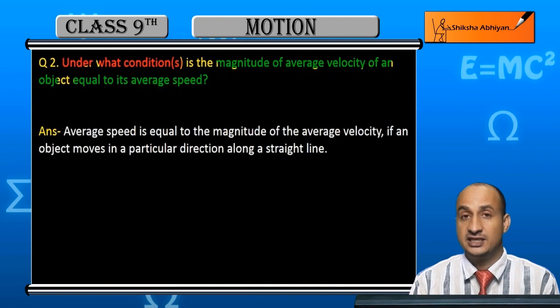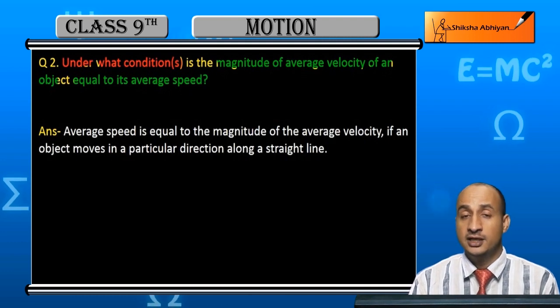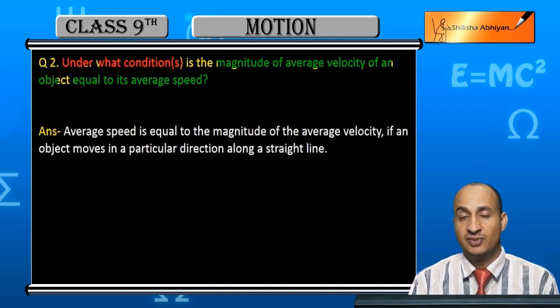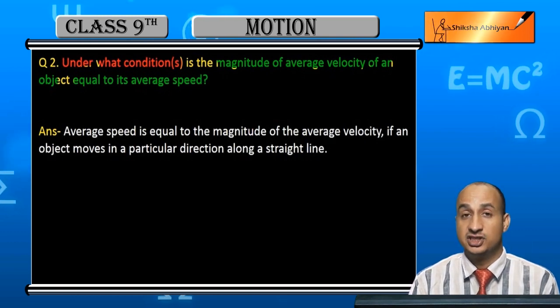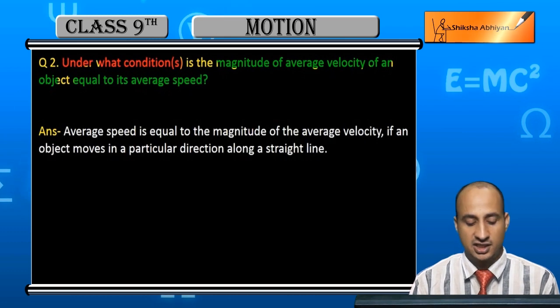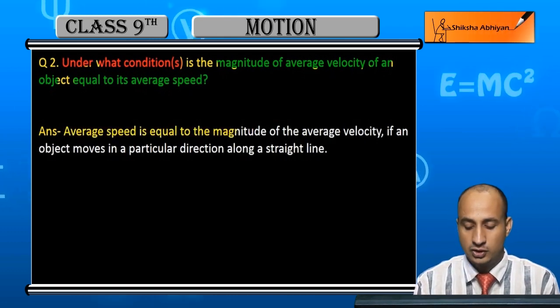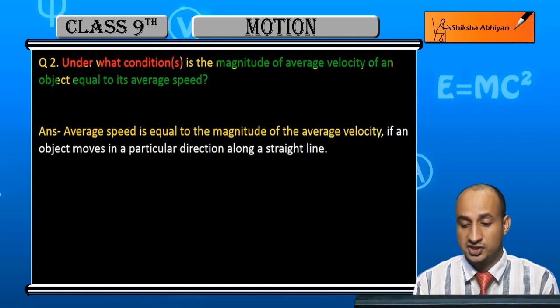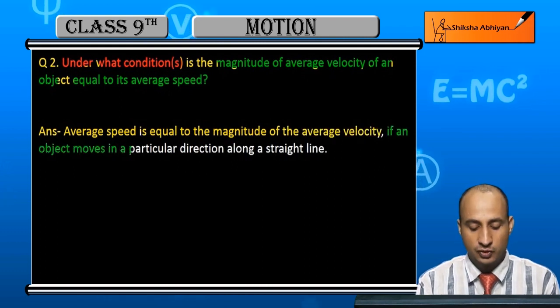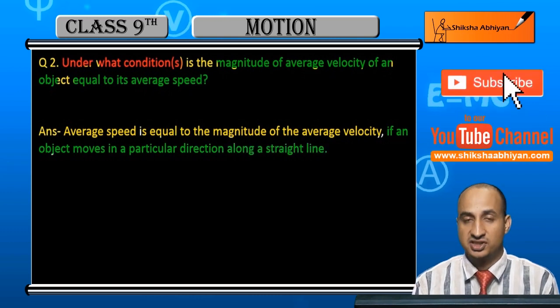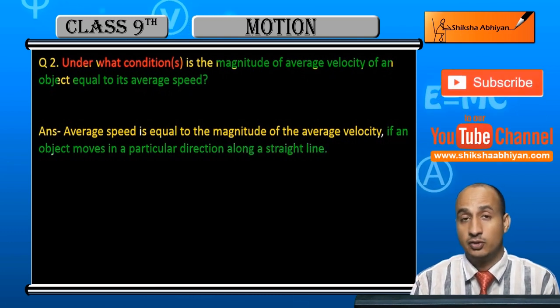Answer: The magnitude of average velocity is equal to average speed when the object moves in a particular direction along a straight line.